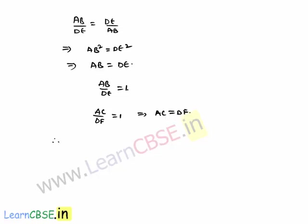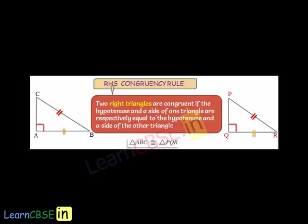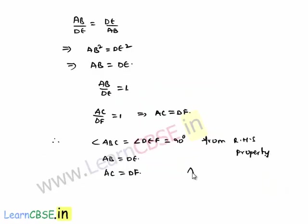Now, we assumed that angle ABC equals angle DEF equals 90 degrees. We proved that AB equals DE and AC equals DF. Therefore, by the RHS property, triangle ABC is congruent to triangle DEF. Thus, two similar triangles with the same area are congruent.